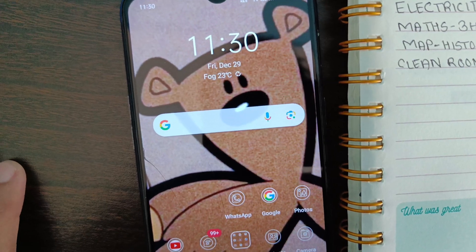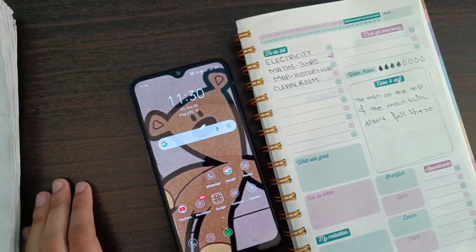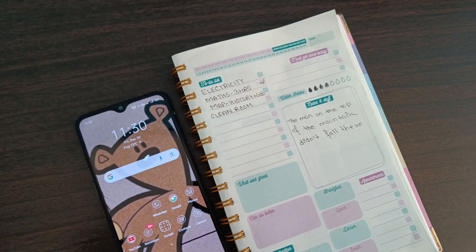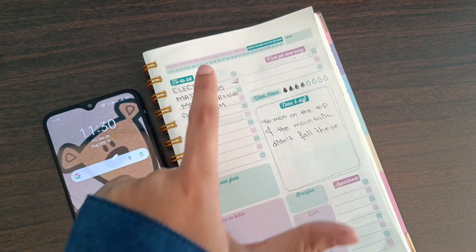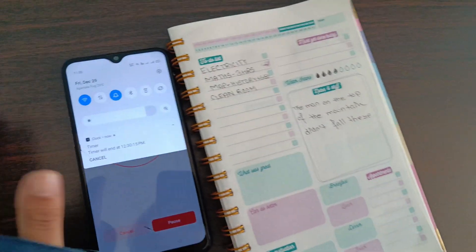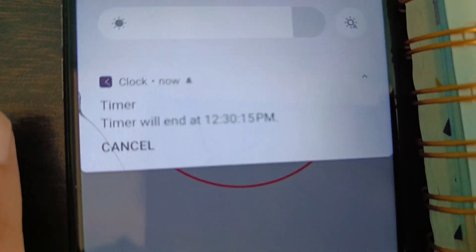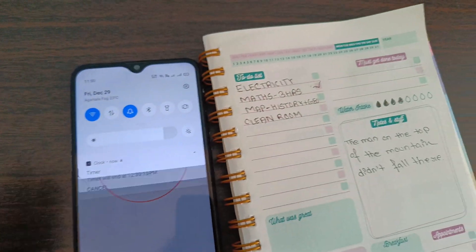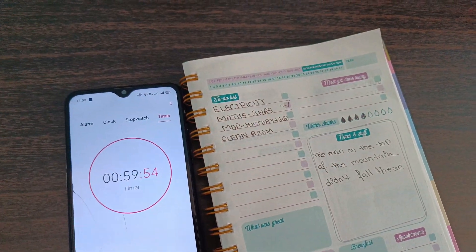It's currently 11:30 AM and I know I got a little late. Right now I'll start revising the chapter electricity for one hour. Let's place a timer of one hour. This timer will end at 12:30 PM, so let's start revising electricity.